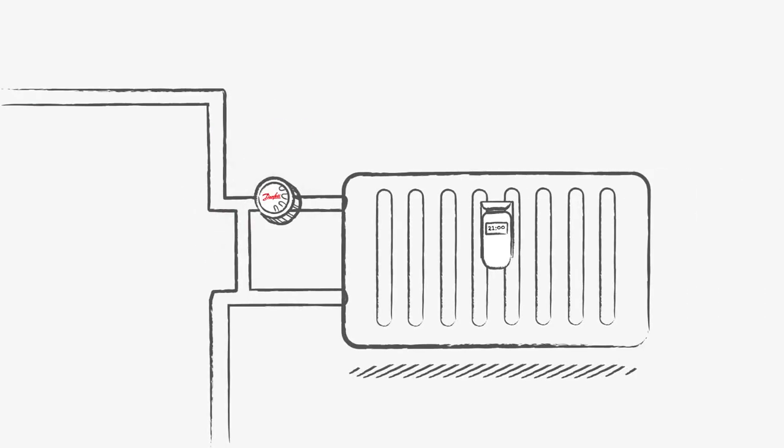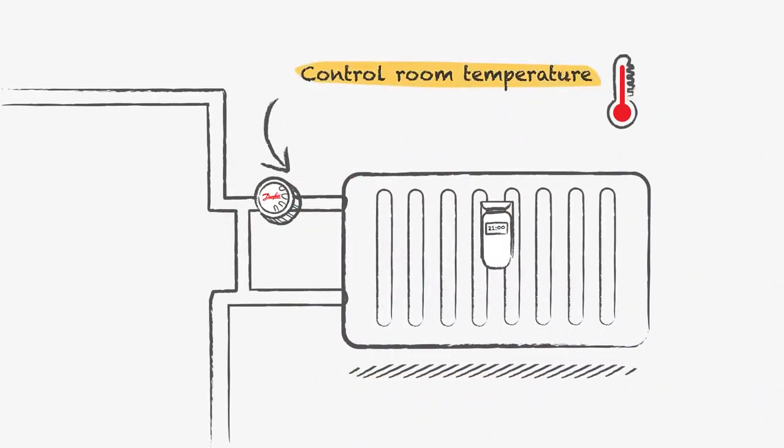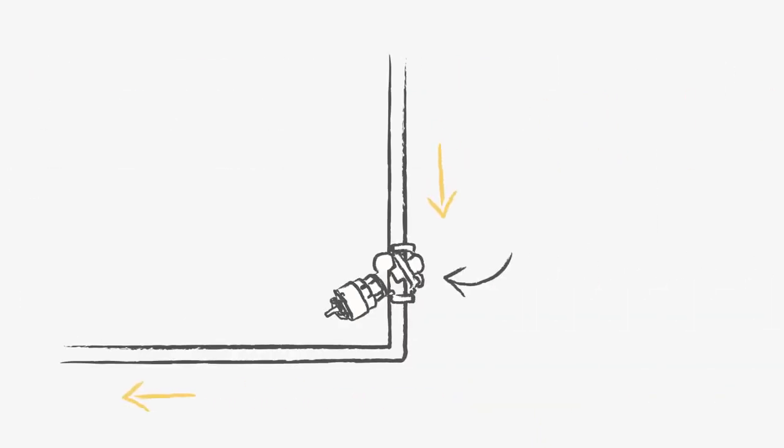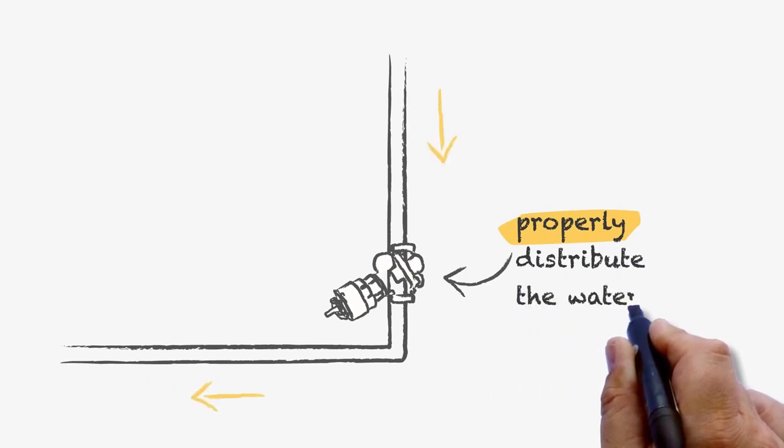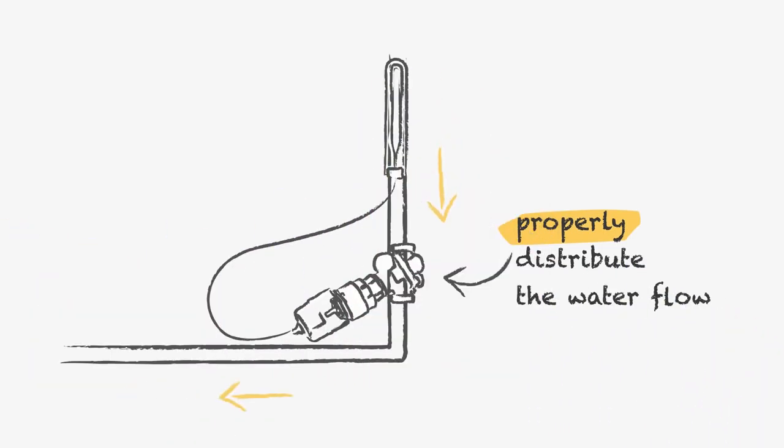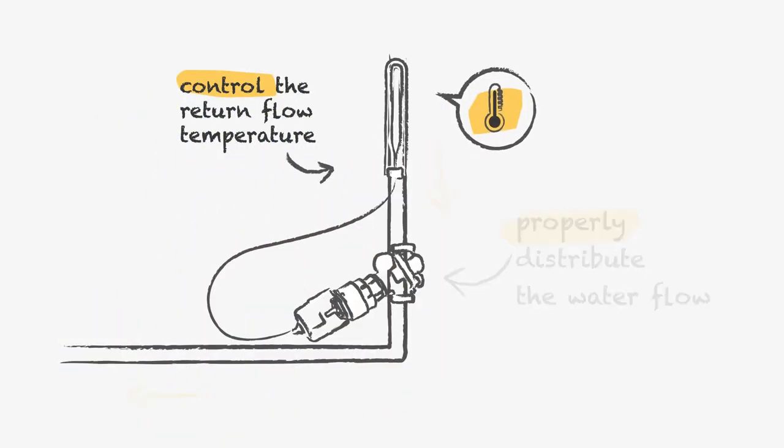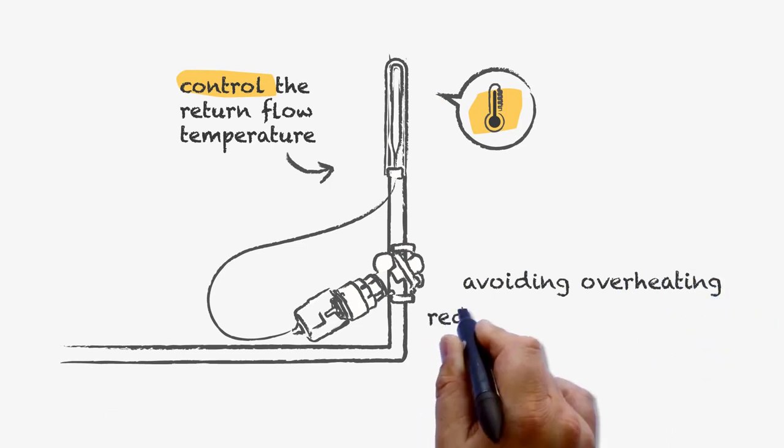The thermostatic radiator valve is there for the resident to control the room temperature. The ABQM pressure-independent balancing valve will properly distribute the water flow through the installation, and the actuator with thermostatic element will control the return flow temperature in the riser, avoiding overheating and reducing unnecessary flows.